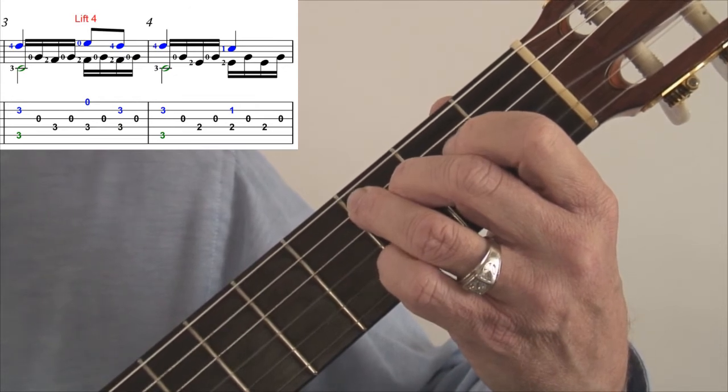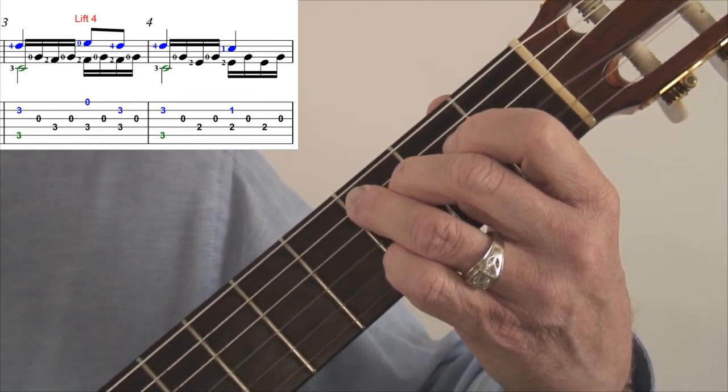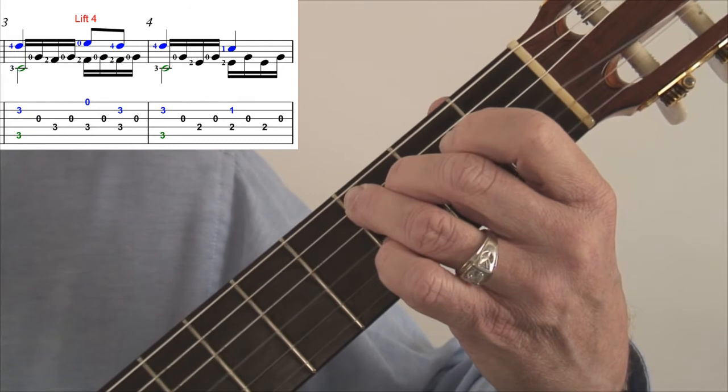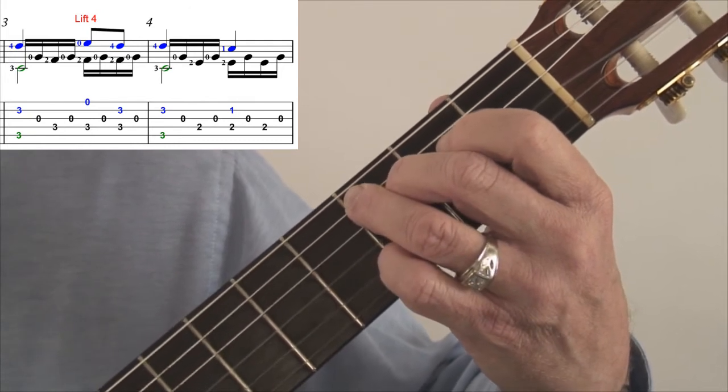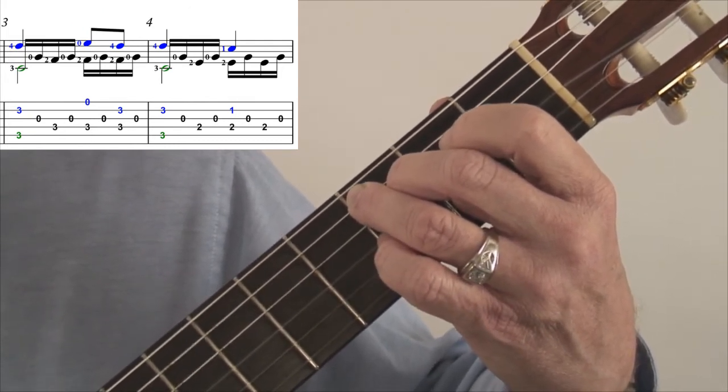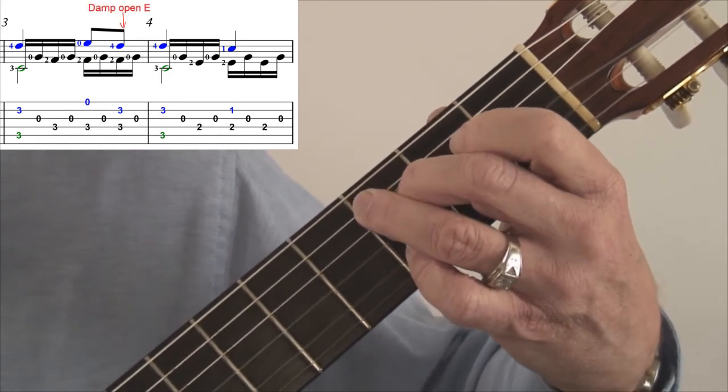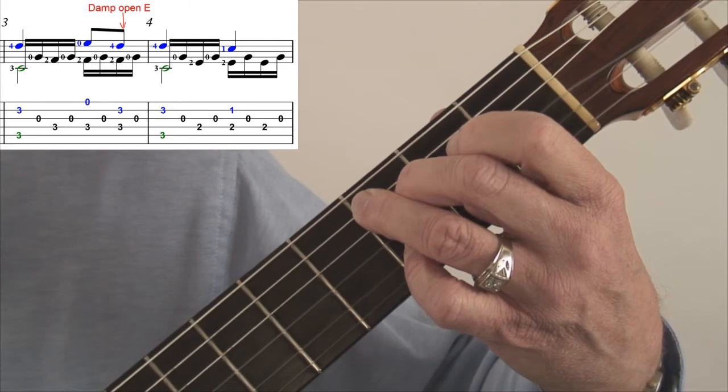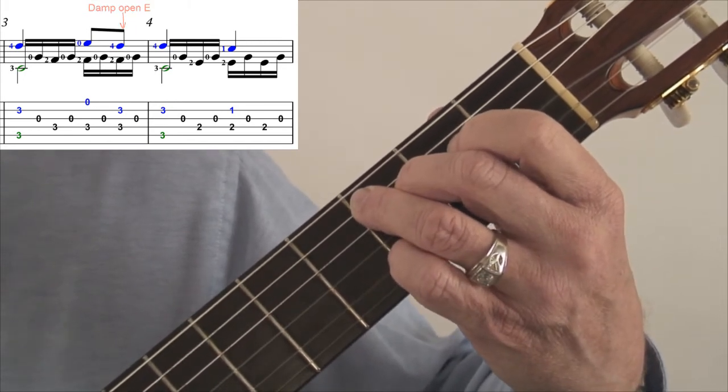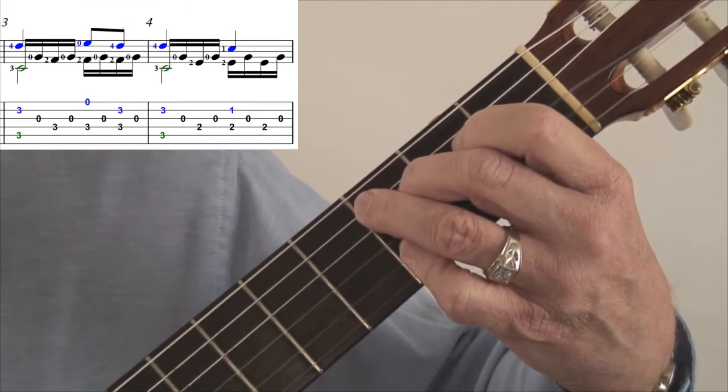What we can do is lift the little finger as we play the open E. So we don't have that. And then when we put the little finger back down, we can put it down kind of sloppy. Lean it over and mute the open E so we have a clean sound.